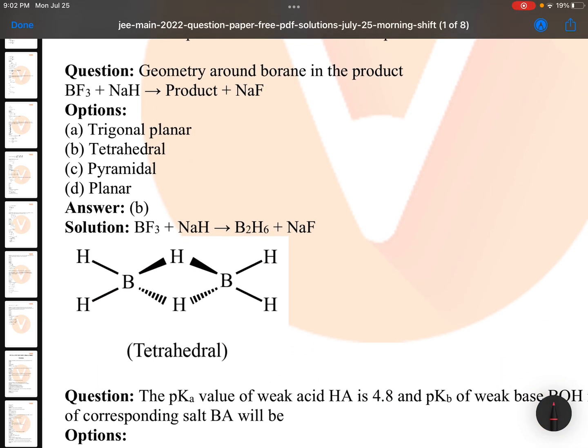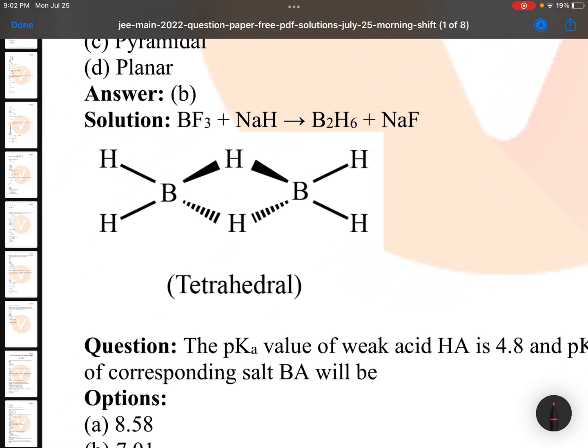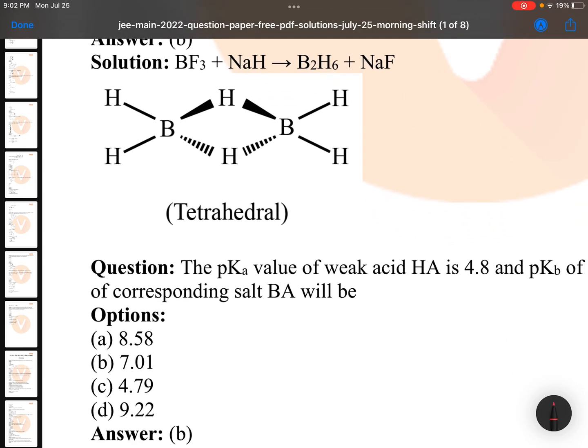Geometry around boron in the product BF3 plus NaH. The product formed is B2H6. We know about the structure of B2H6, it is with sp3 hybridization tetrahedral. Two BH2 groups are in the plane, one hydrogen above the plane, one hydrogen below the plane. Those bonds are banana bonds, tau bonds. Very interesting.